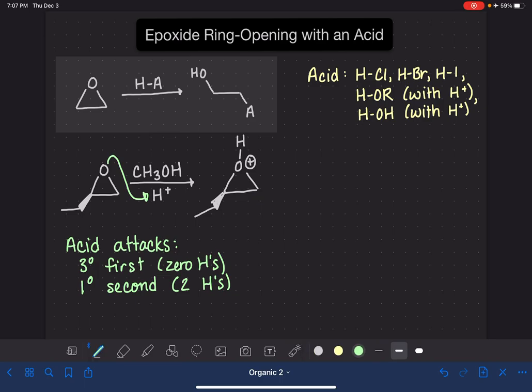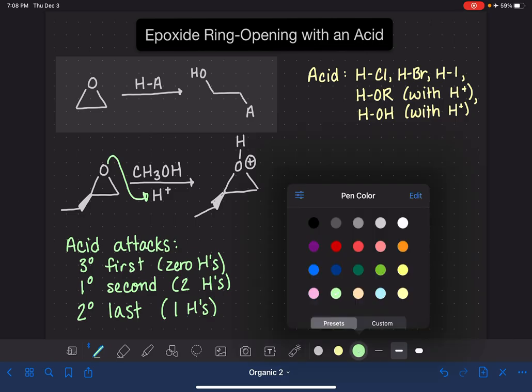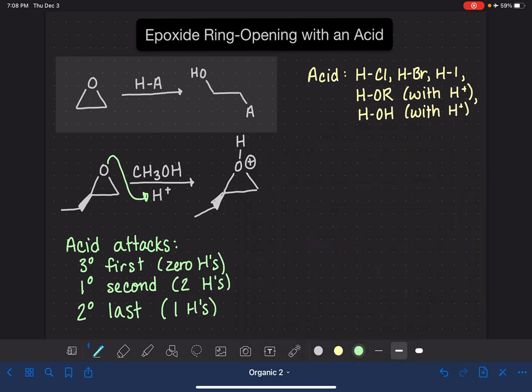Its third choice, its last choice, would be a secondary carbon. So we'll make a note of that as well. A secondary carbon, which is one that has one hydrogen. That is the last choice for attack. So let's draw that. And while we're drawing that, let's talk a little bit about why it works this way. Because this is very bizarre.